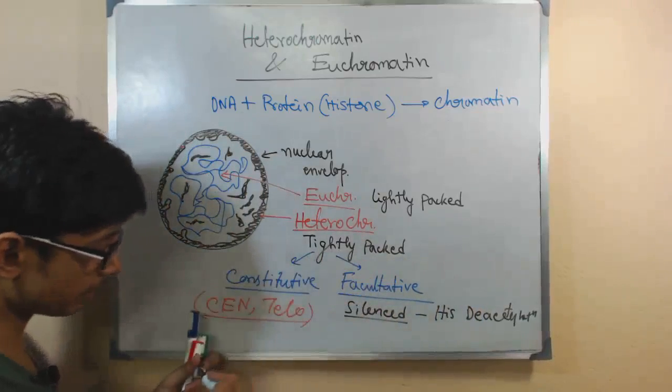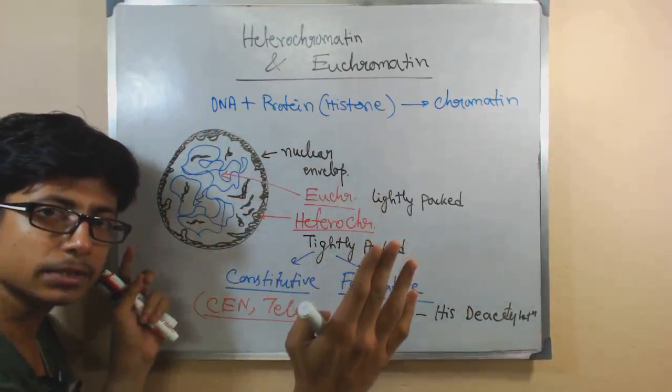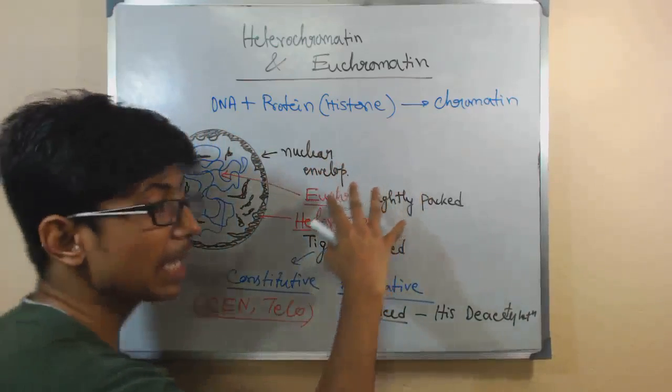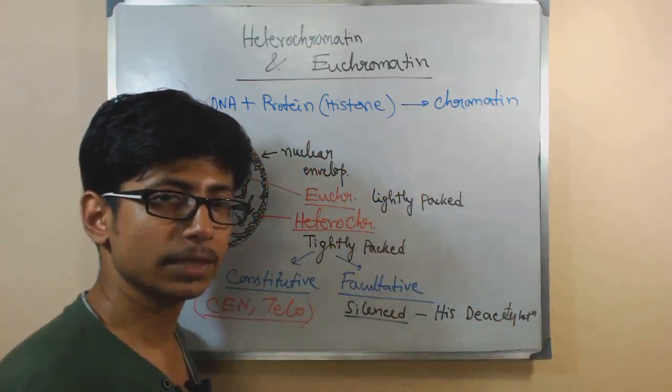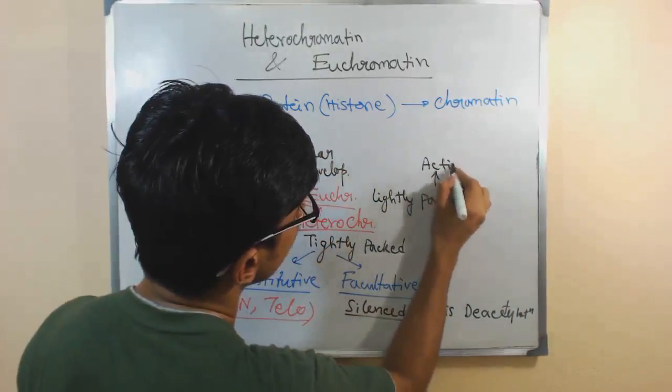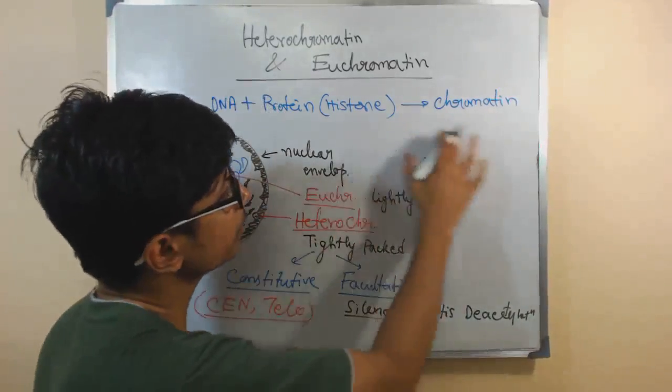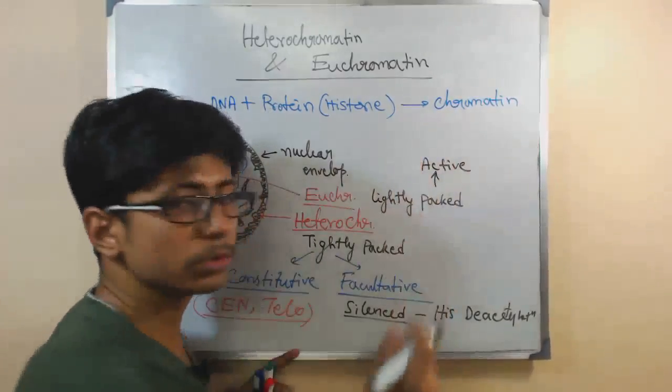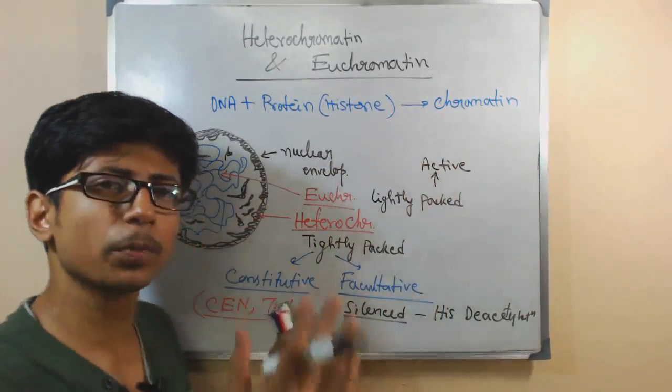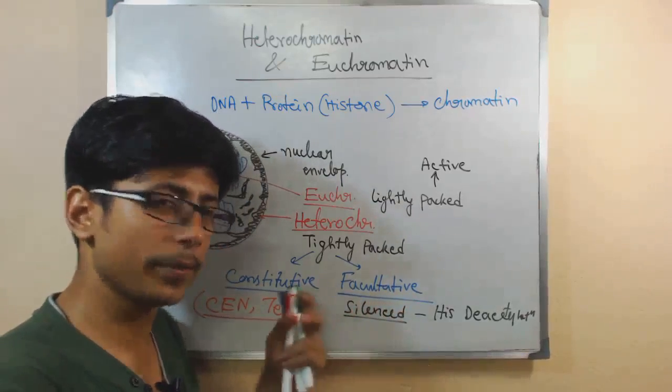And this Heterochromatin are found surrounding the nuclear envelope, surrounding the nucleus outside. In the middle, we have the light-colored stain that is the Euchromatin. Euchromatin is functional. This is active. What does this Euchromatin do? The DNA in Euchromatin regions are open. They are not coiled with histones. The histones are taken away. They are now free for transcription, for the future stages, for DNA replication.